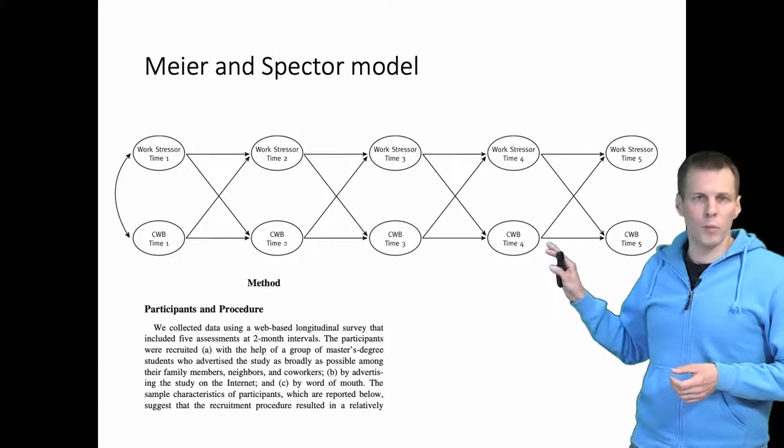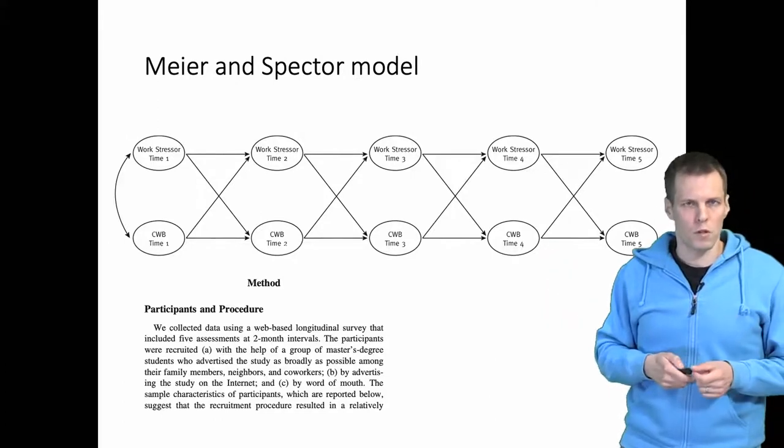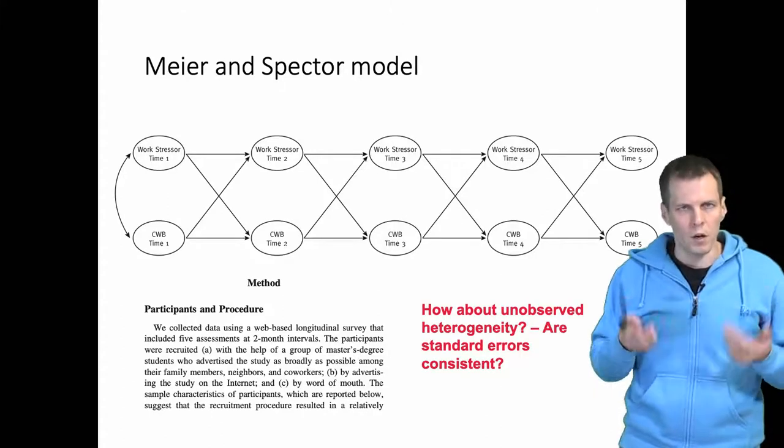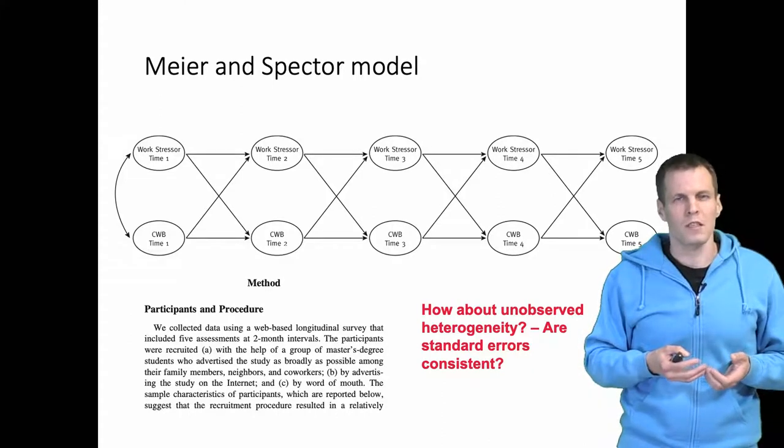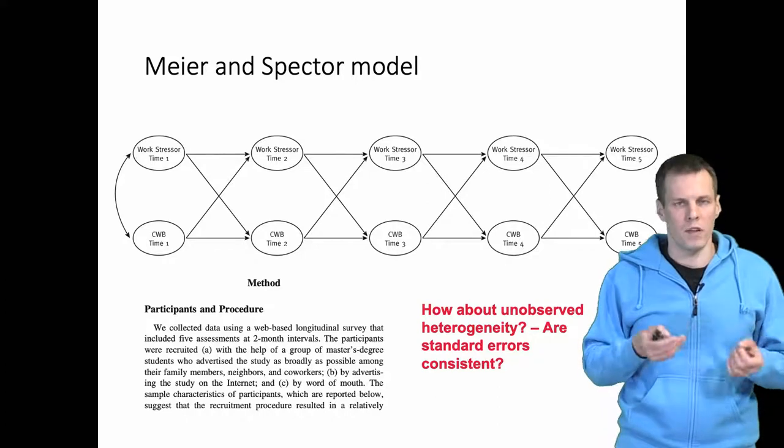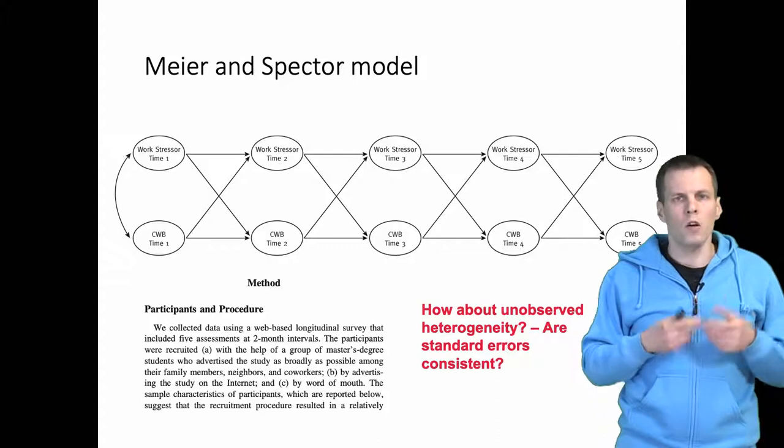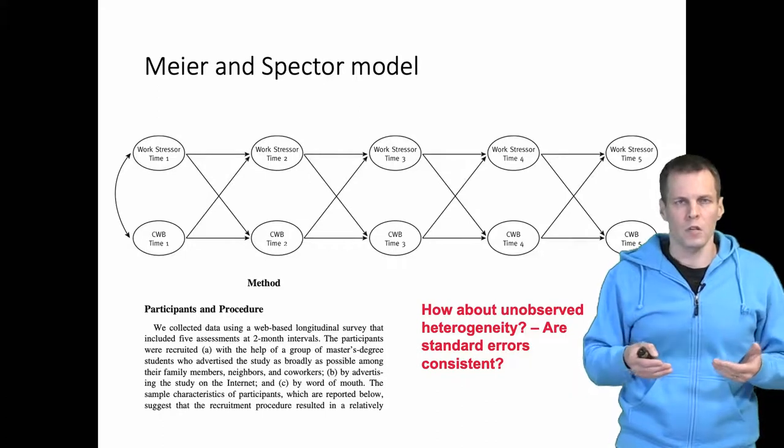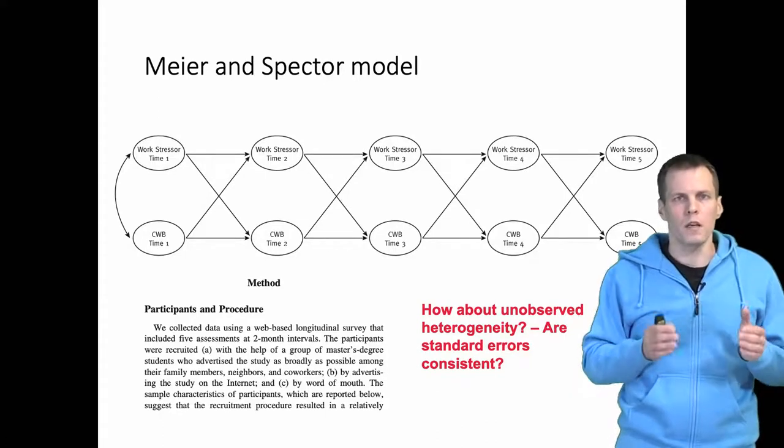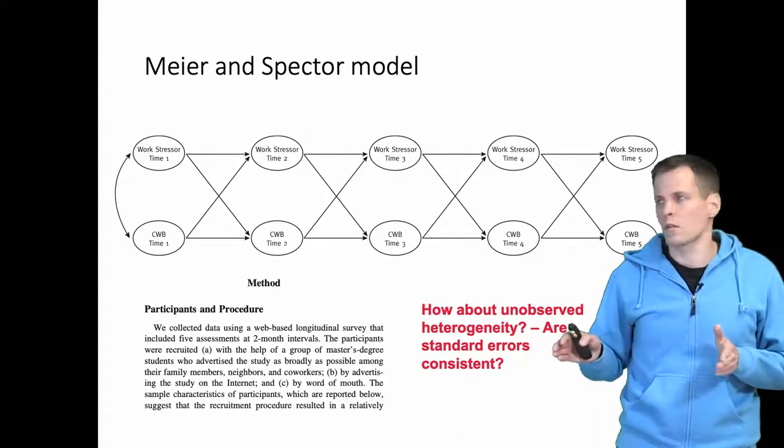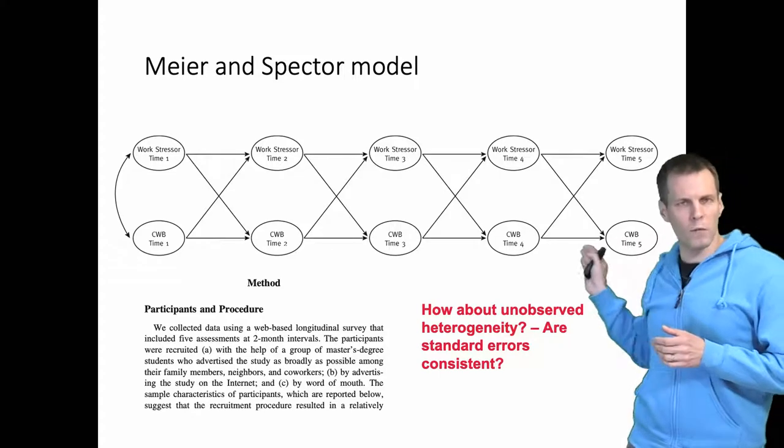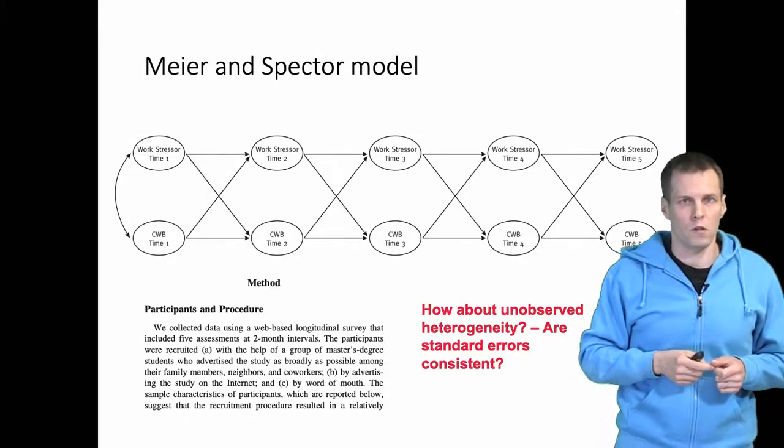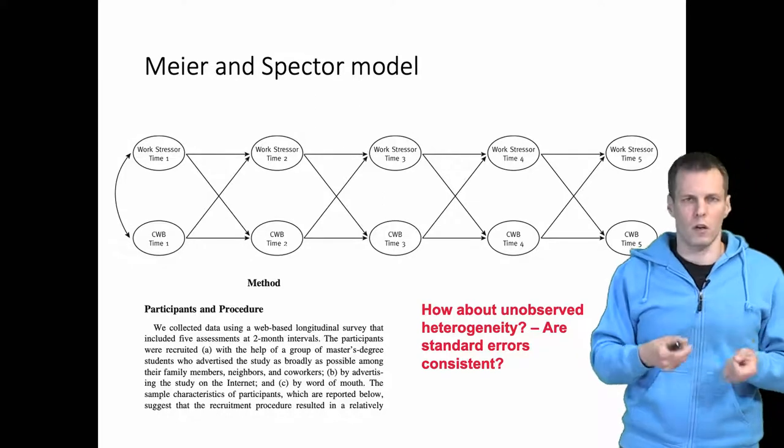This model of repeated observations causes two concerns. First, if we have repeated observations, are our standard errors consistent? In normal regression analysis with repeated observations, standard errors will be underestimated because of unobserved heterogeneity. This is not generally a concern in cross-lagged panel models because we estimate these models from the wide format data. Instead of having repeated observations for each time period, we have repeated variables for each time period. Standard errors are not of concern because of unobserved heterogeneity.